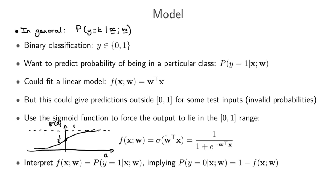We're going to have to figure out how to set the parameter vector w. The value we get out we interpret as the probability of being in the positive class, which implies the probability of being in the negative class is just 1 minus the output from our model. As in linear regression, we use the convention that the first feature value is set to 1, which absorbs the bias term into the weight vector. I'll be clear about when we're doing this and when we're not — you can also infer it from the model notation.